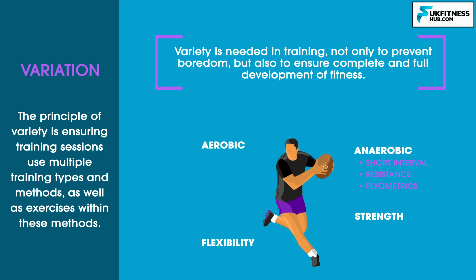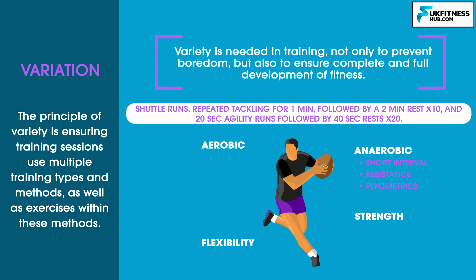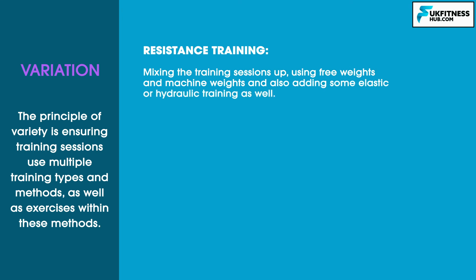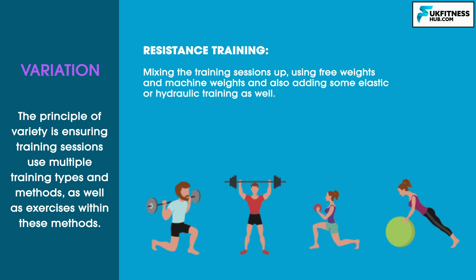Furthermore, interval training sessions do not always have to be on one stationary piece of equipment. In rugby, for example, this could include shuttle runs, followed by repeated tackling, followed by agility runs — doing 20 seconds on and 10 seconds off of each exercise for a desired number of sets. For aerobic training, variety would include changes between fartlek, circuit, continuous, and aerobic interval training, as well as variations within these methods, such as a runner doing a 10k on different surfaces like a treadmill and outdoor running. For resistance training, variety would mean mixing sessions using free weights, machine weights, and also adding elastic and hydraulic training. It also means when training chest muscles, using incline, flat, and decline activities to ensure the entire pectoral muscle is trained.